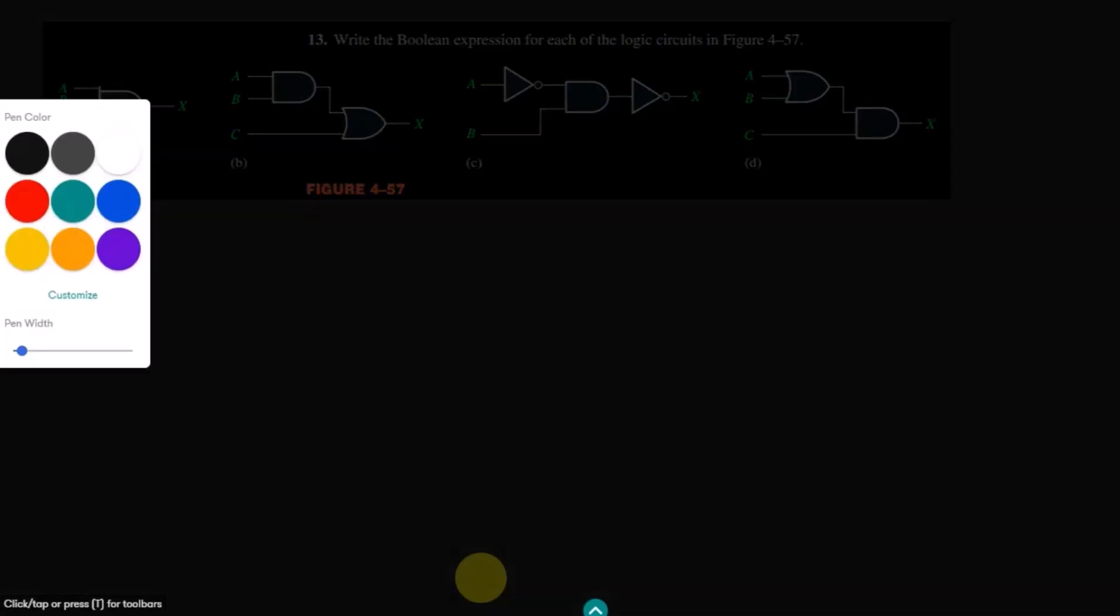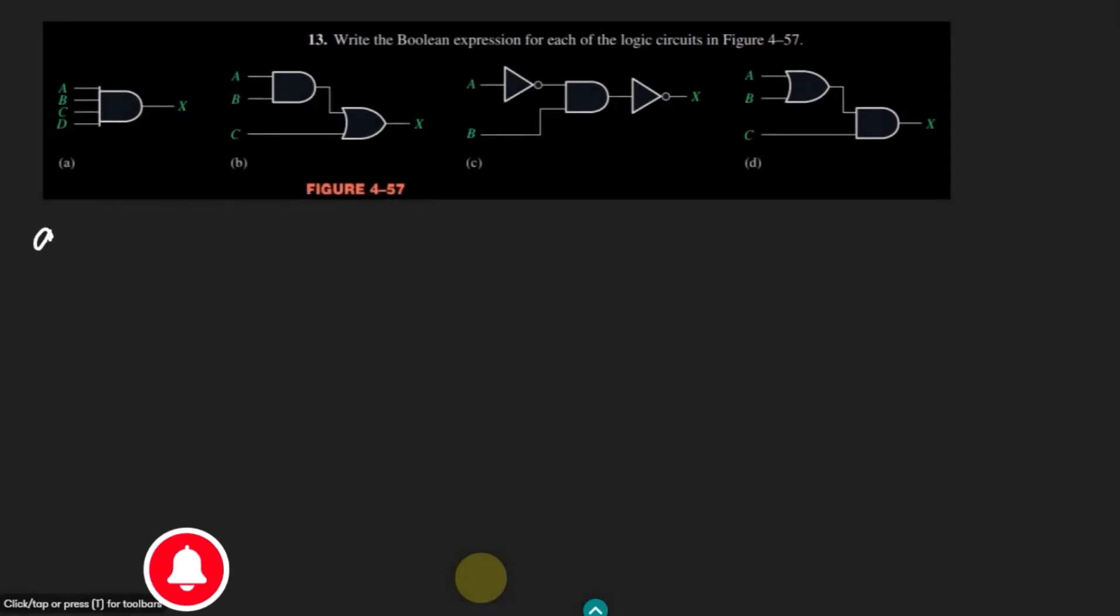Let me start from part A. In part A we can see that all of these inputs are given to this AND gate and therefore the output here is x equal to ABCD because these are given to this AND gate and these are multiplied together due to the AND operation.